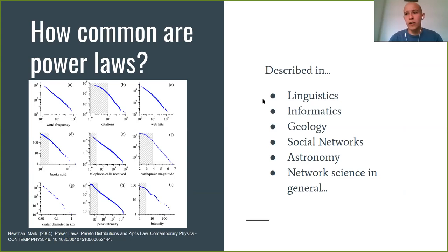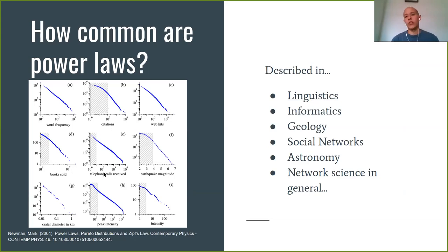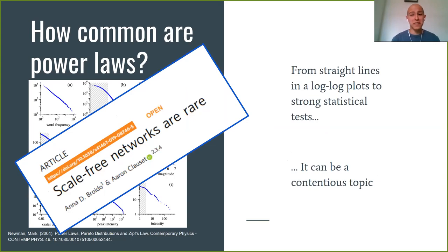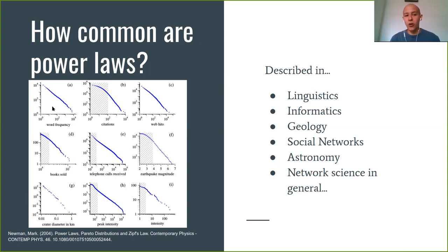The heights of people are not scale-free. But this type of relationship has been described in many places: word frequencies in linguistics, citation networks, the number of telephone calls received in social networks, and the magnitude of earthquakes in geology have all been found to follow power law distributions. However, this is very controversial, because in many cases it amounts to just seeing a straight line in a log-log plot and concluding it's a power law. Particularly during the last 20 years, this has been very contentious in network science.